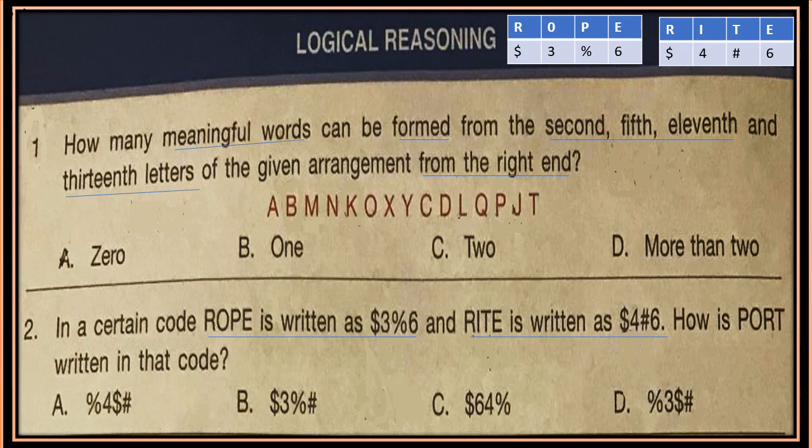Question 2: In a certain code, 'rope' is written as $3,6th and 'right' is written as $4,6th. How is 'port' written in that code? See the upper right corner — I have made 2 tables with the corresponding code for 'rope' and 'right'. Each letter has a certain code, so use the tables to write the code for 'port'.